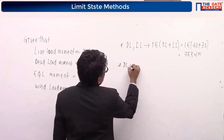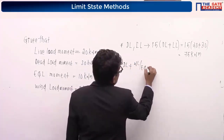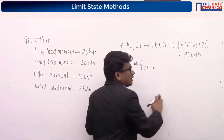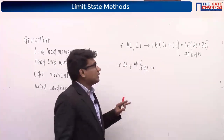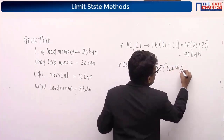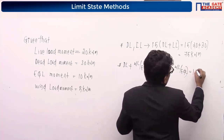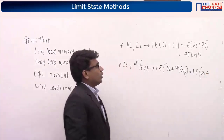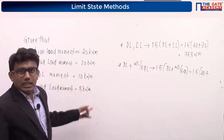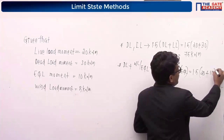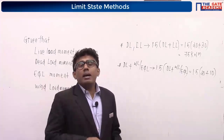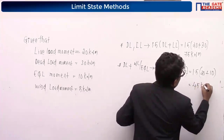For load combination 2 — dead load plus wind load or earthquake load — the partial safety factors are 0.9 or 1.5. Since there is no mention of reversal of stresses, we use 1.5. We consider the earthquake load of 10 kN·m as it is the maximum. So design moment = 1.5 × (20 + 10) = 45 kN·m.